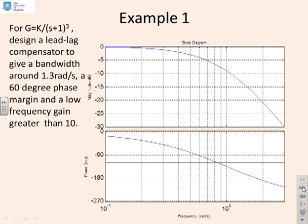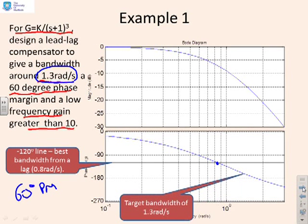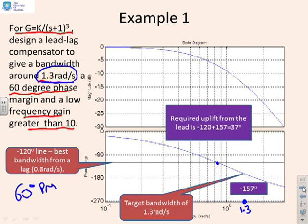We now do an example. G = K / (s+1)³. We want to design a lead-lag compensator to give a bandwidth of around 1.3 rad/s, a 60-degree phase margin, and a low frequency gain greater than 10. The minus 120-degree line is marked, since that's the line used to calculate a 60-degree phase margin. This intercept point is where you'd act for a simple gain design, but we actually want to increase the bandwidth to 1.3 rad/s. So we mark the target bandwidth at ω = 1.3.